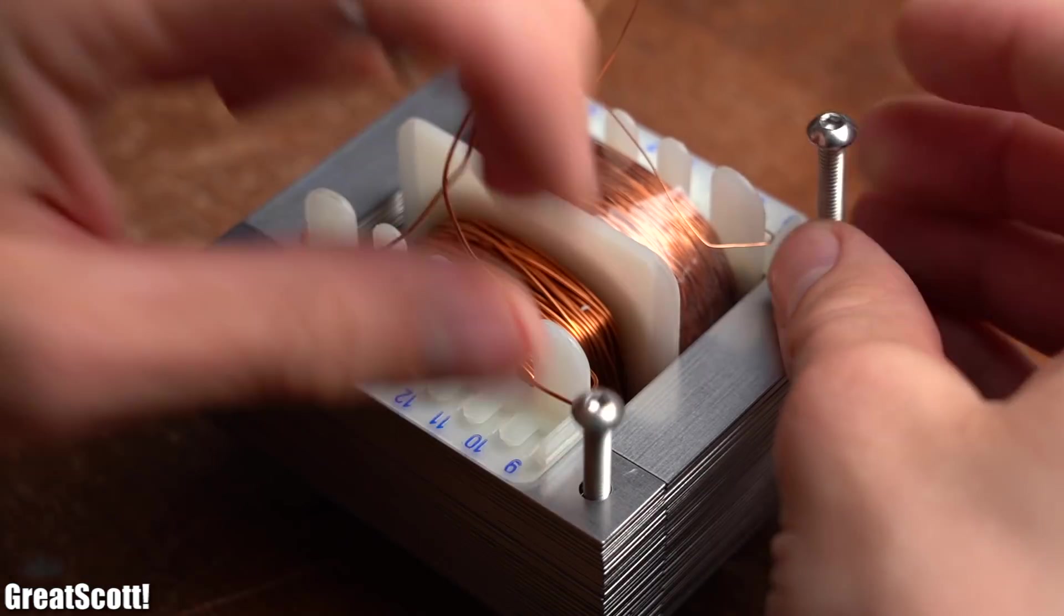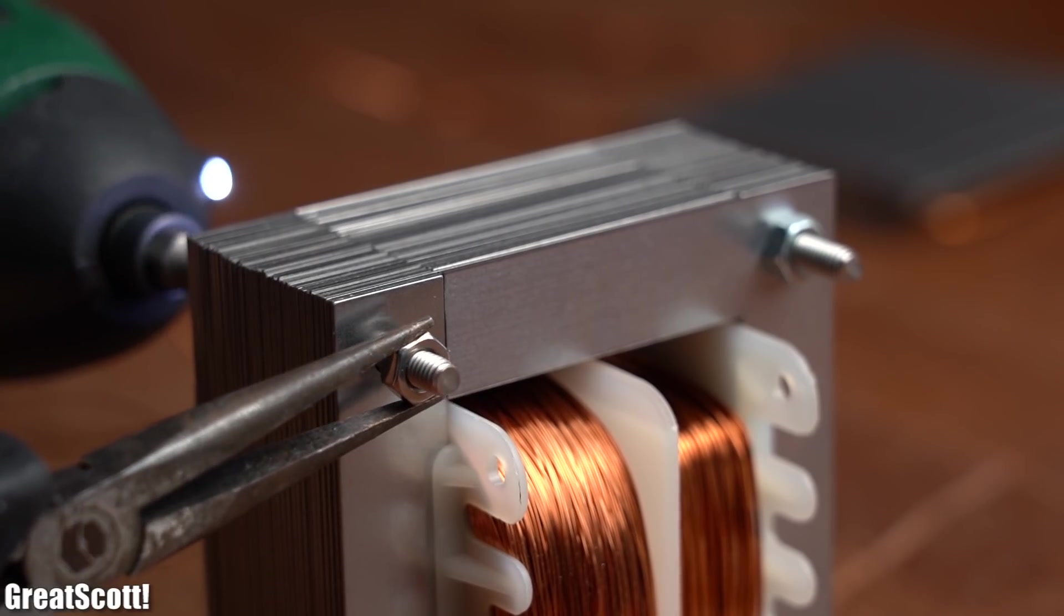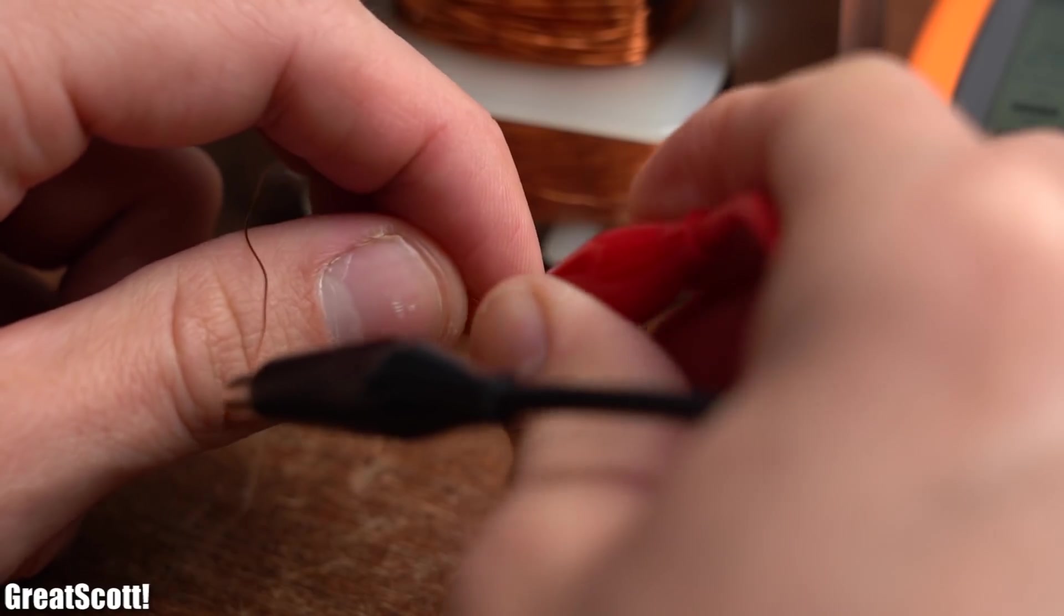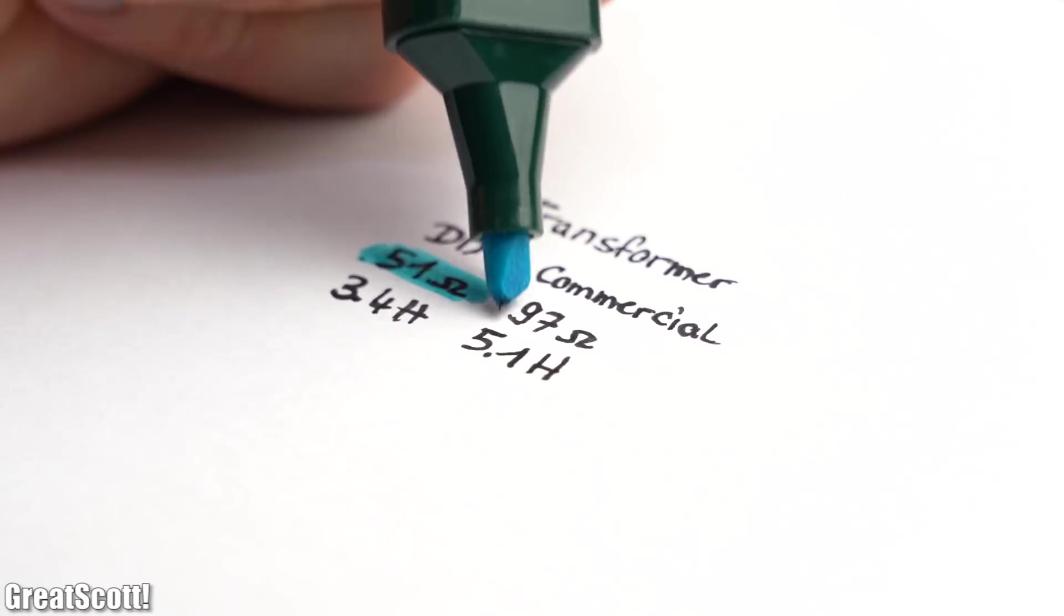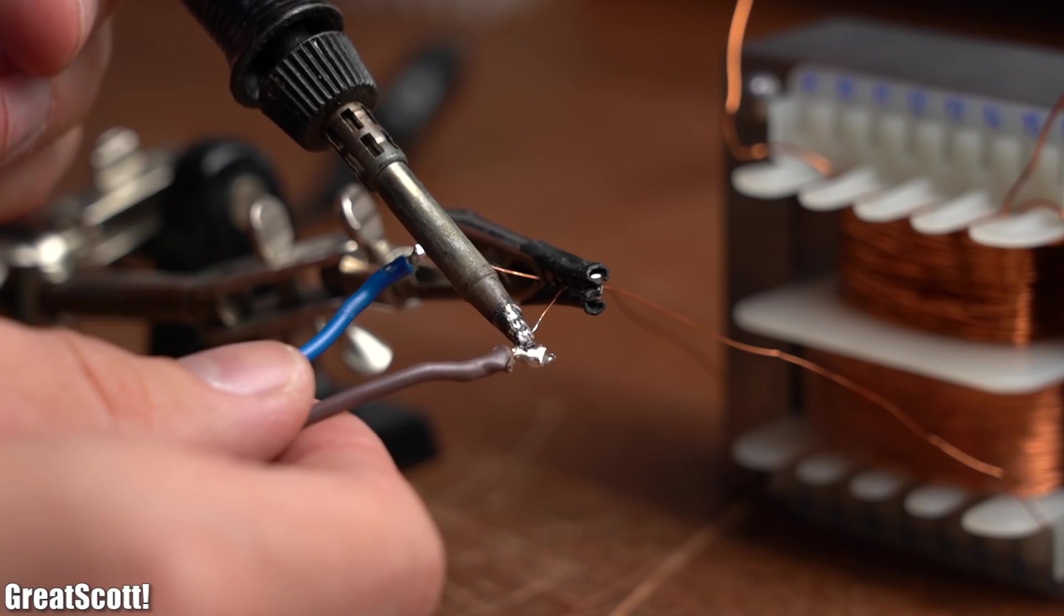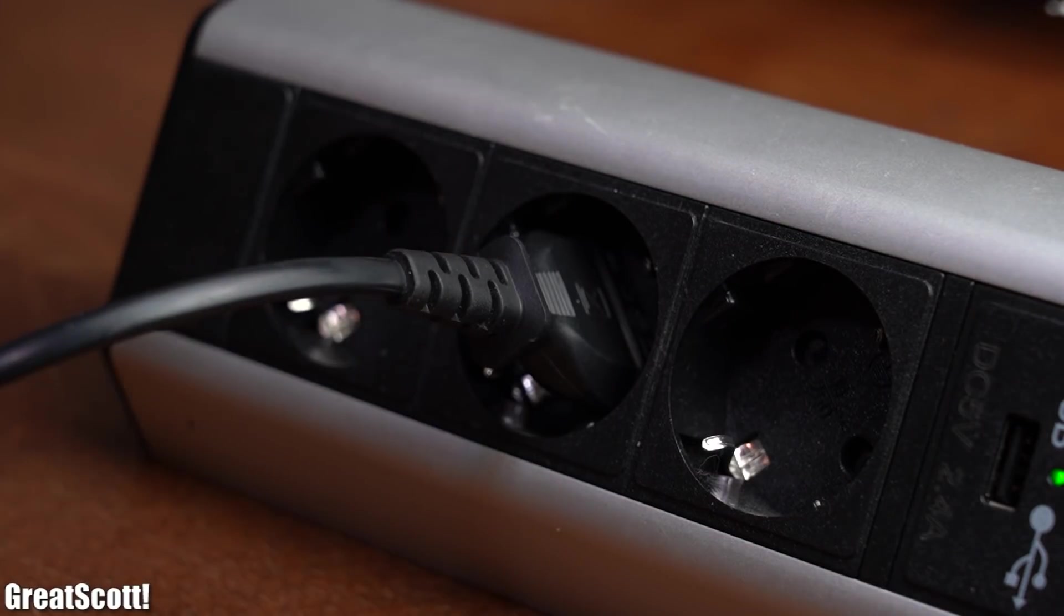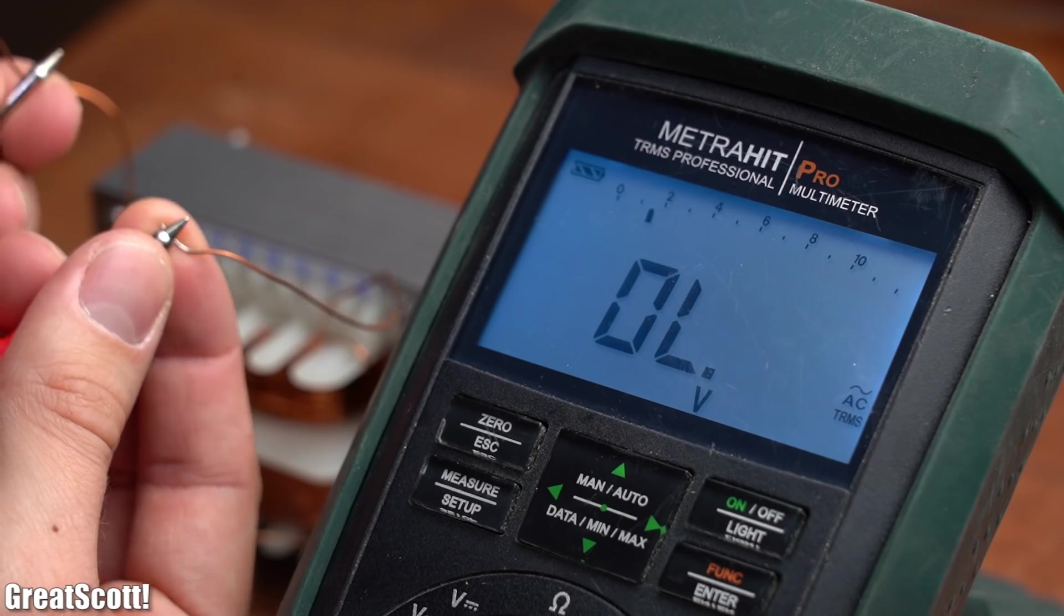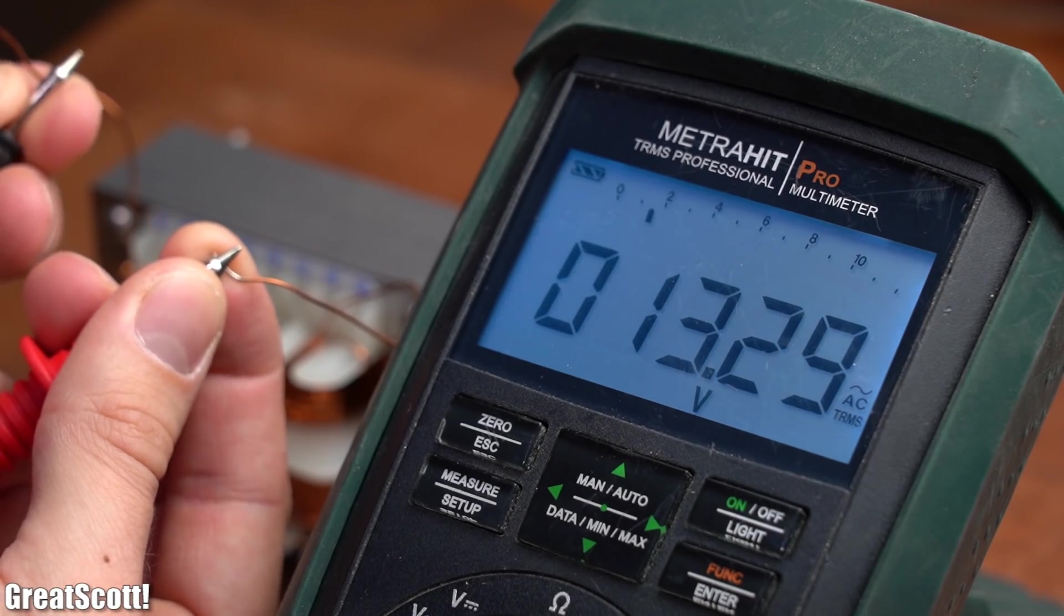But anyway to complete my transformer I used M4 screws and nuts to hold the core together. After then measuring the resistance and inductance of the primary side which were 51 ohm and 3.4 henry, which is close enough to the commercial transformer from the previous video, I soldered mains wires to the primary coil and connected it to the mains voltage. And as you can see nothing blew up and I was able to measure an output voltage of 13.3 volts at the secondary side. Awesome!